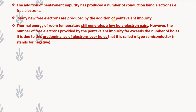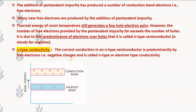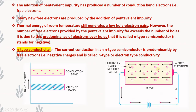This is due to the predominance of electrons over holes, and that is why it is called an n-type semiconductor, where n stands for negative. In the diagram, a very small number of holes are created in the valence band, but there are a large number of free electrons present in the conduction band. The current conduction in an n-type semiconductor is predominantly by free electrons, which are negative charges, and this is called n-type or electron-type conductivity.